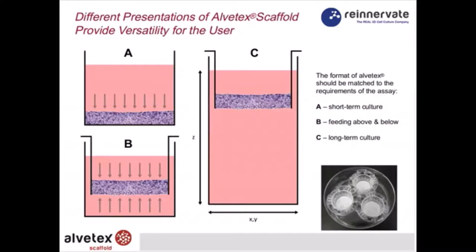The presentation of Alvitex is important. In the plate format — the 12-, 24-, and 96-well — the scaffold sits on the base of the well and cells receive nutrition from the medium above only, as depicted in panel A. Whereas in panel B, in the well inserts, cells can receive nutrition from above and below. This is important because if you're wanting to maintain viability for a longer period of time, we would recommend growing in well inserts. It is also possible to create a three-dimensional culture that goes all the way through the scaffold using the insert.